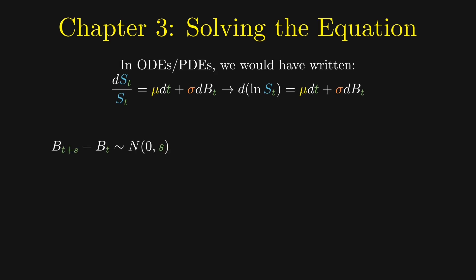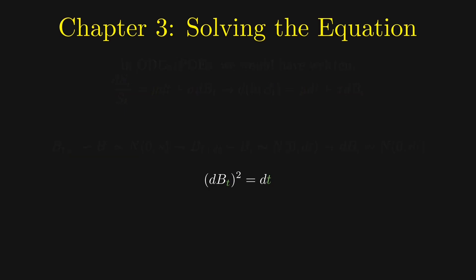Going back to the normally distributed increment property of the Brownian motion, we see that the differential dB_t has a variance of dt. Informally, we write dB_t squared equals dt. Note that this derivation is not rigorous. We need to talk about quadratic variation to prove this rigorously, but for now we will proceed with this result.